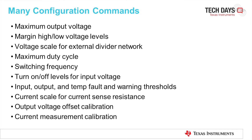There are also many configuration commands. There are commands in PMBus to configure the maximum output voltage to prevent load damage if the output voltage exceeds a certain threshold. There are commands to margin the output voltage high or low independently. There are commands to scale the output voltage and scale the external divider network. Commands to set the maximum duty cycle, switching frequency, as well as commands to turn on and off the input voltage levels. There are also commands to set the input, output, and temperature fault and warning thresholds, and to scale the current for the external current sense resistance, as well as calibrate the output voltage offset and output current gain and offset errors.